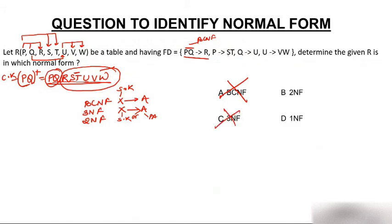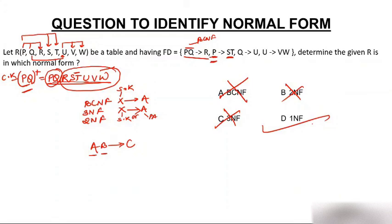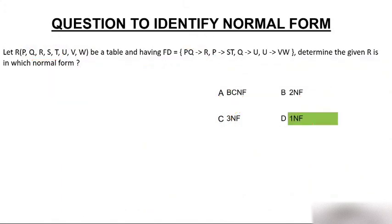Let's check 2NF for P→ST. The key is PQ, and ST are non-prime attributes. ST is dependent on only P, which is part of the key, not the full key PQ — this is a partial dependency. Therefore the table is not in 2NF either. So finally, the table is in 1NF. The correct answer is D: the table is in 1NF.